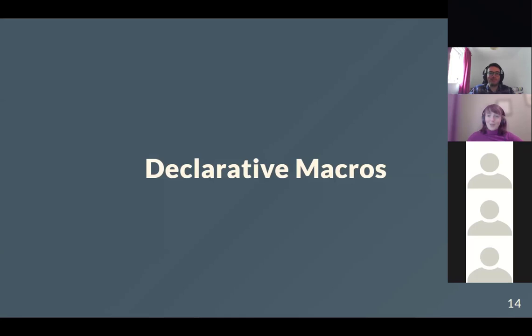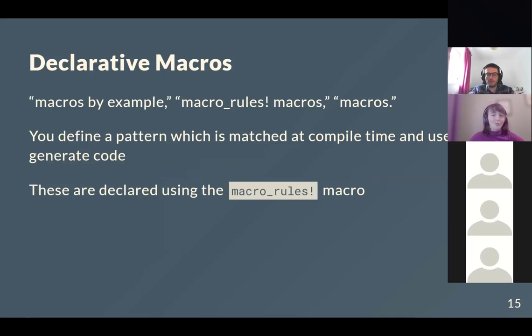Declarative macros are also interchangeably called macros by example, macro_rules macros, or just macros. They're called macros by example because that's essentially what you write — you say this is how I want the code stamped out. At the point in compilation when the AST is being parsed, the pattern is matched and used to generate the code we want.